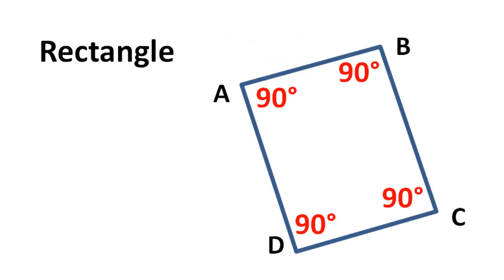Then we come to the rectangle, which is a parallelogram in which all the angles are equal. And since the angles are equal, each angle must be equal to 90 degrees.